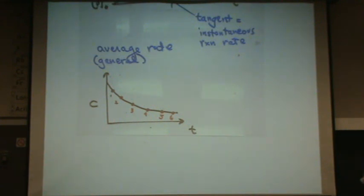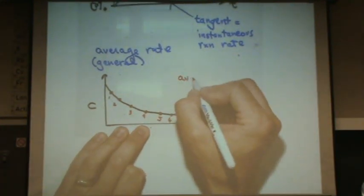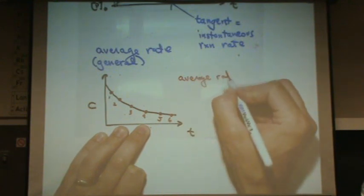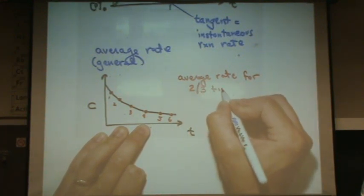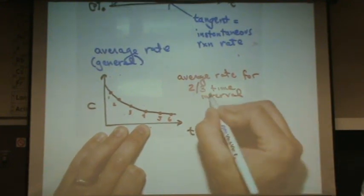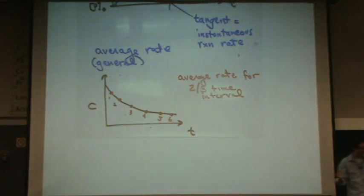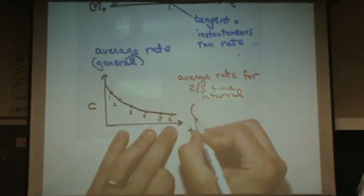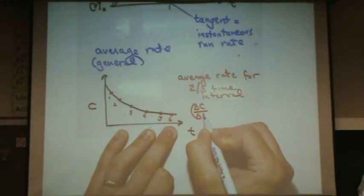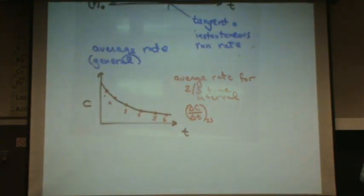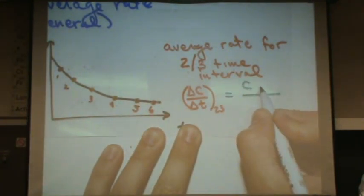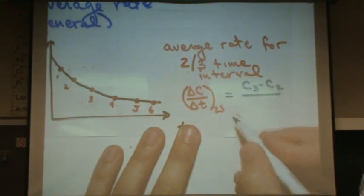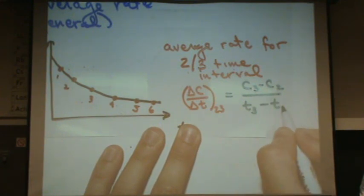So, say I'm measuring that in lab as my reaction is going on. Then I can find the average or general rate for the two, three time interval. So I can find the average rate between points two and three. And so that would be the change in concentration over the change in time from points two to three. And all that would be is the concentration at three minus the concentration at two, change in y over change in x. So that's time at three minus time at two.